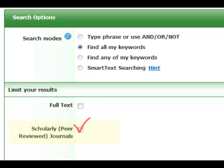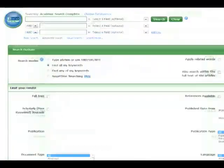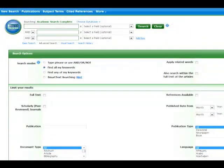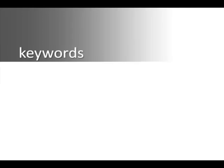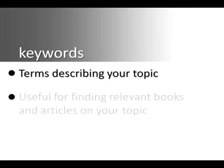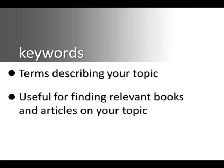Let's try a sample search in a library database. We talked in tutorial 1 about developing keywords. These will be useful as you search for relevant articles in the databases. Always remember to brainstorm synonyms and related terms as you're searching.